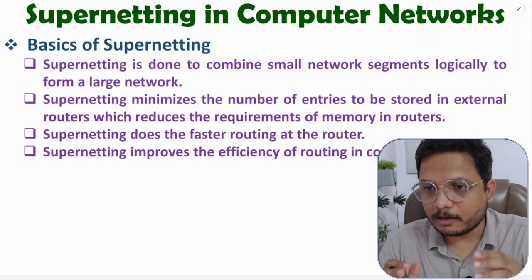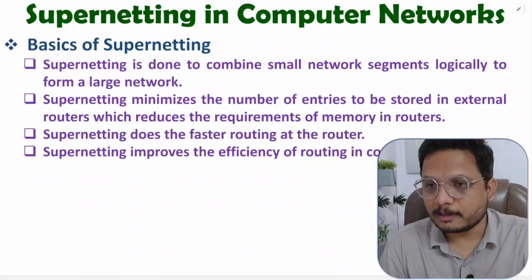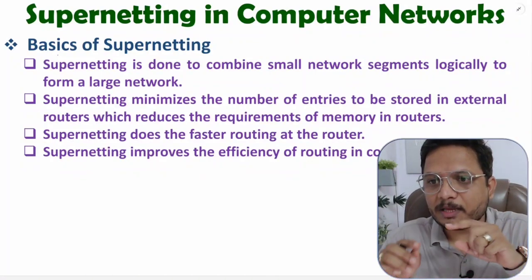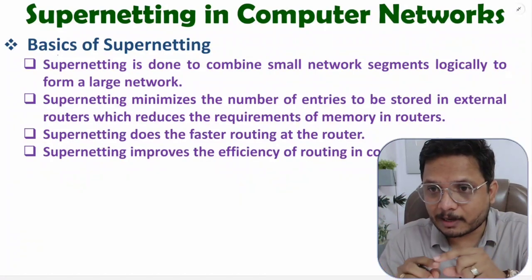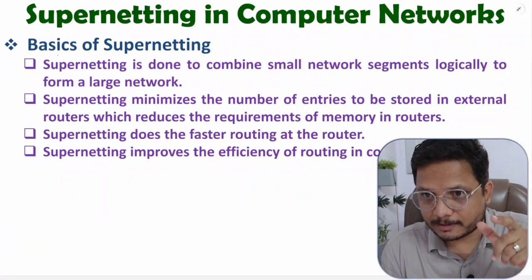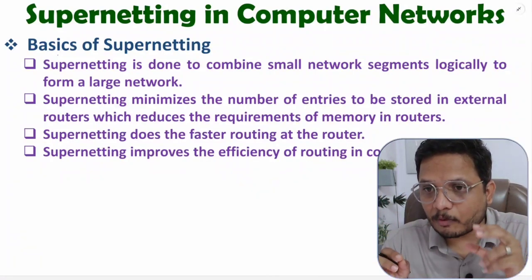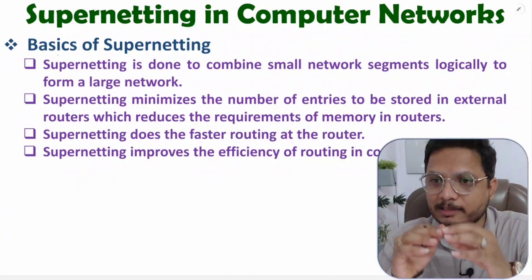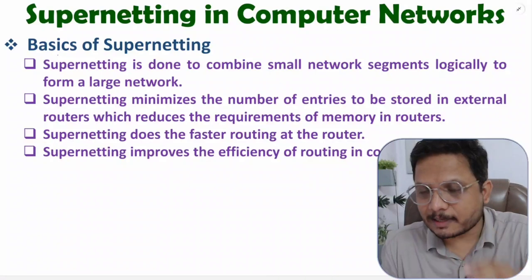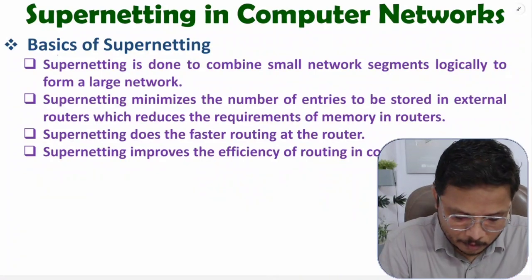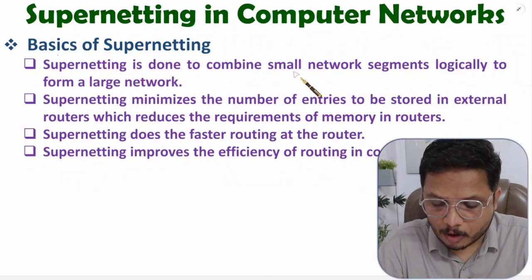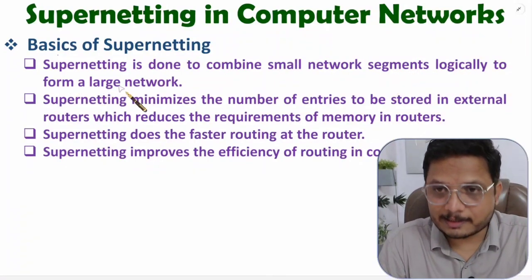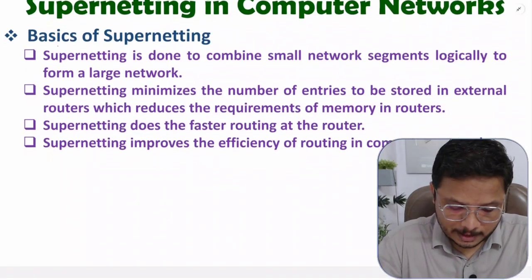In basics, you need to understand what supernetting means. Supernetting is the opposite of subnetting. In subnetting we bisect a large network into small network segments, while in supernetting we combine small network segments to form a large network. So supernetting is done to combine small network segments logically to form a large network.